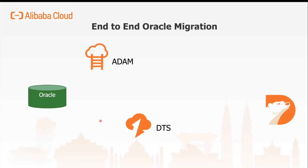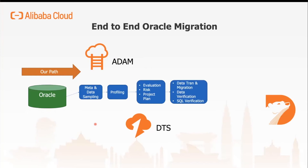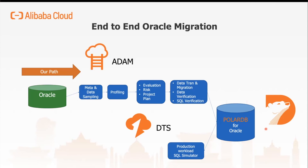Here is how you do the end-to-end Oracle migration using Adam and DTS with PolarDB as the target. First, use Adam to do metadata collection and sampling, profile your application workload, evaluate risk, and come up with a project plan. Then do automatic data transformation, data verification, and SQL verification. Using DTS, replicate the data into PolarDB. Open PolarDB temporarily for application testing, do performance testing, and simulate production workload against it. After that, do a gradual switchover, additional stress tests if needed, and finally a cutover. This is a very scientific approach to migrating out of Oracle.